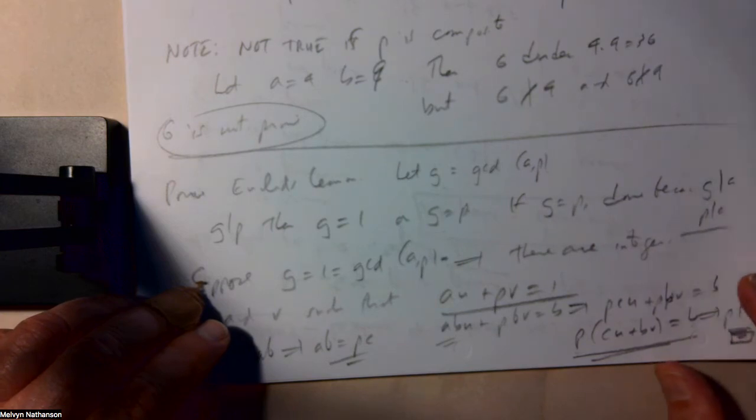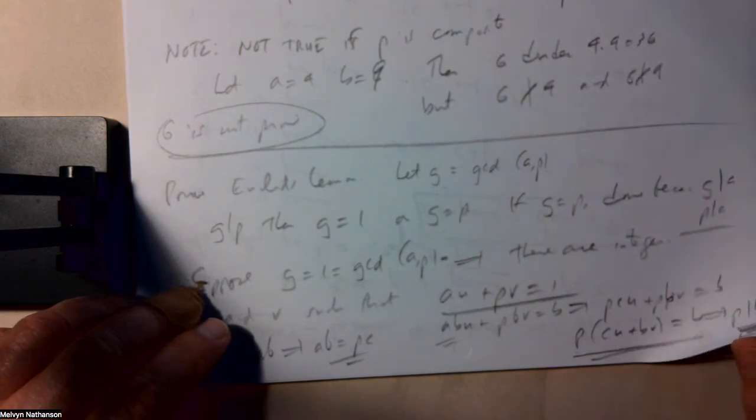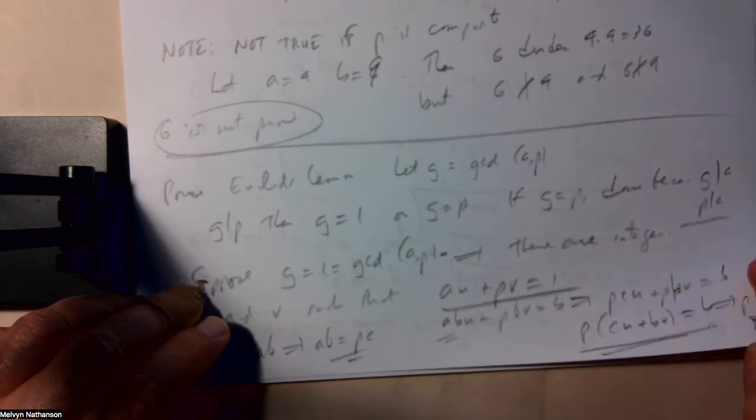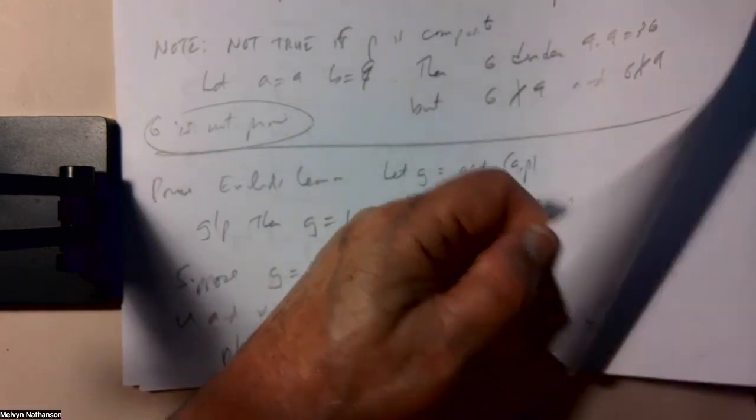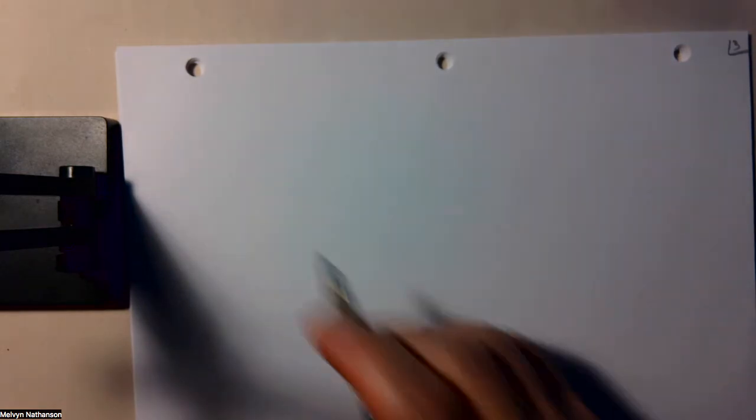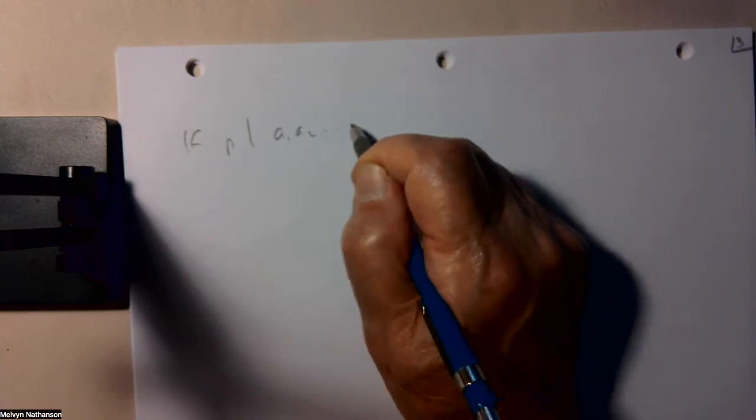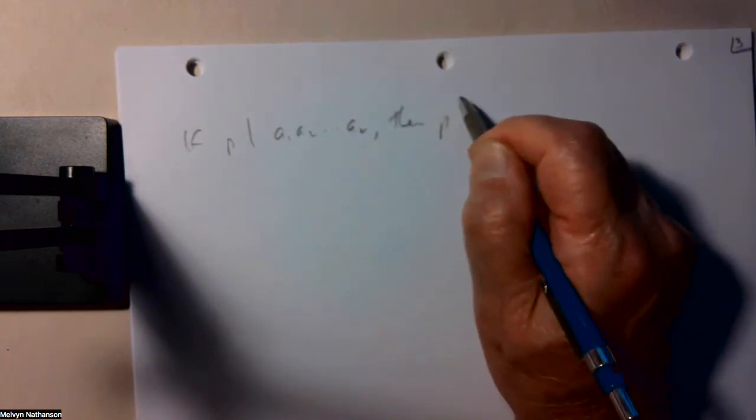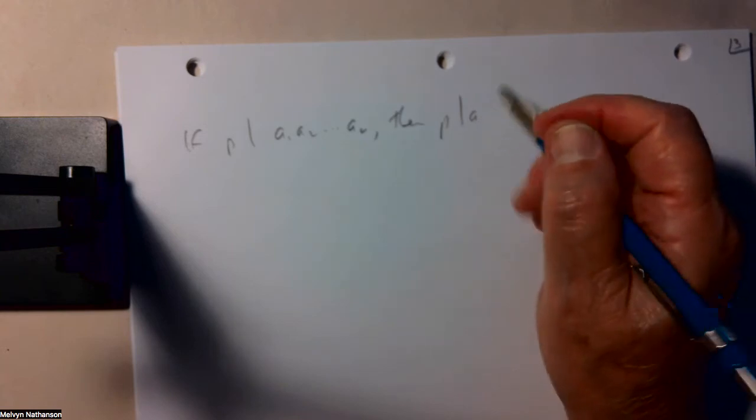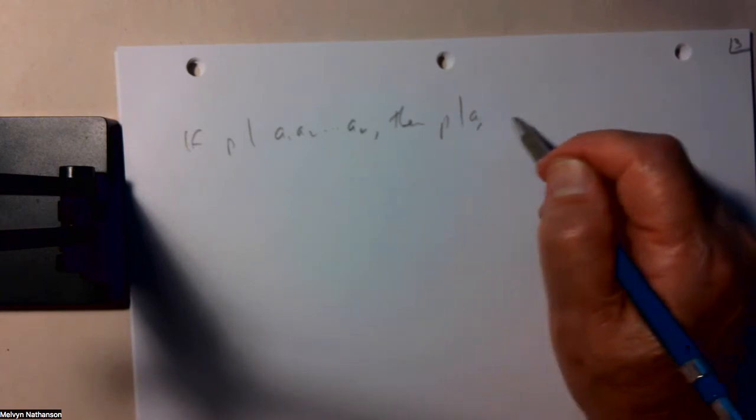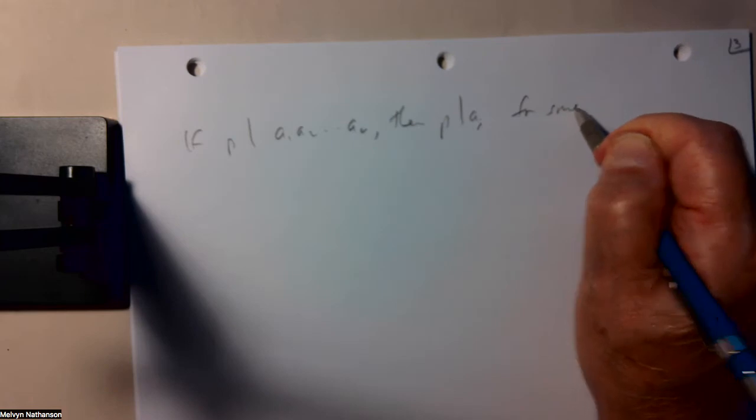The more general statement is the following. If p divides a product of n integers, then p divides one of them, at least. p divides a_i for some i.